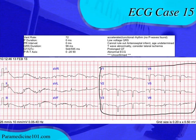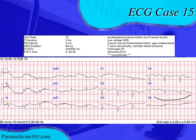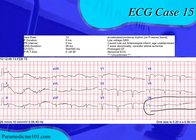Looking at the precordial leads, we do have late R-wave progression. This is an elderly female patient, and this late R-wave progression is probably due to an old anterior wall MI. You'll notice there are essentially QS waves in V1 through V3, and even in V4 and V5 there's mostly what looks like a QS wave with no R-wave until V6. This is a strong indication the patient has had an extensive old anterior wall MI.